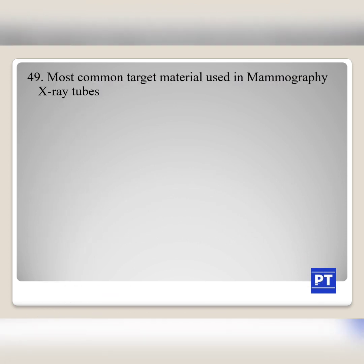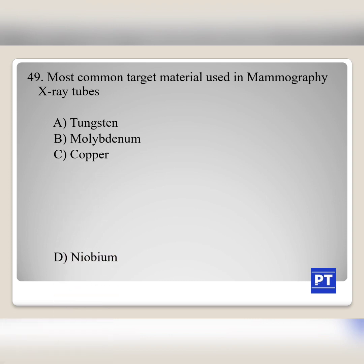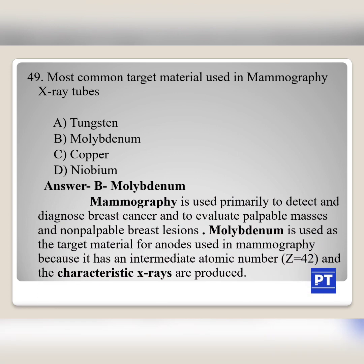Question No. 49: Most common target material used in mammography X-ray tubes. Option A tungsten, Option B molybdenum, Option C copper, Option D niobium. The answer is Option B, molybdenum. Mammography is used primarily to detect and diagnose breast cancer and to evaluate palpable and non-palpable breast lesions. Molybdenum is used as the target material for anodes in mammography because it has an intermediate atomic number of 42 and produces characteristic X-rays. Molybdenum is used as both cathode and anode material in mammography.